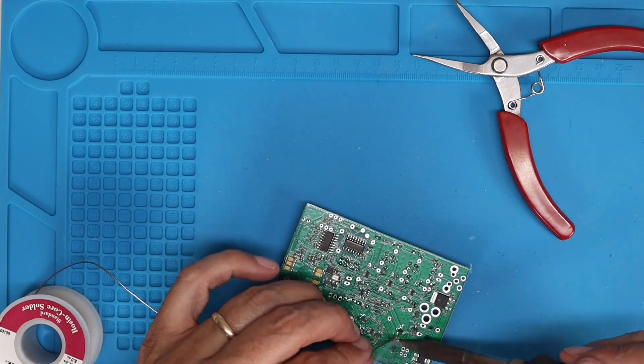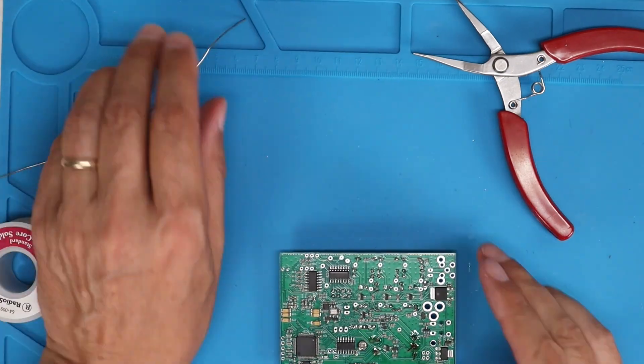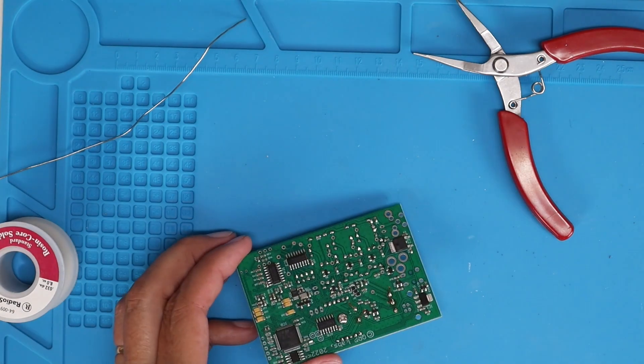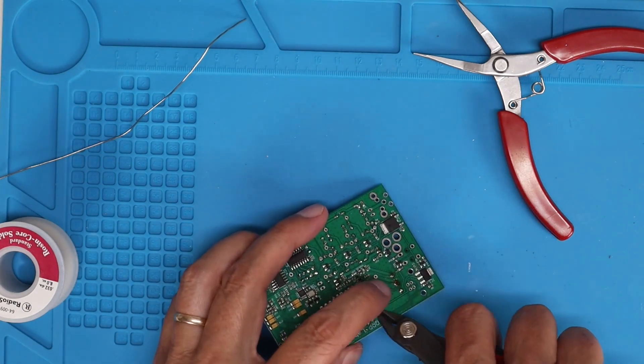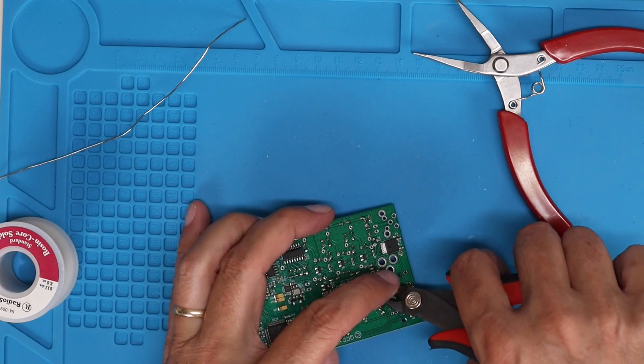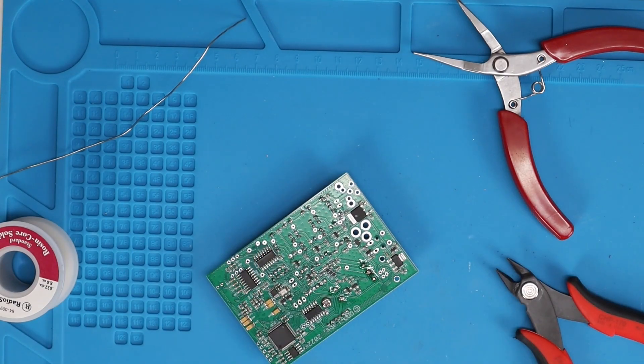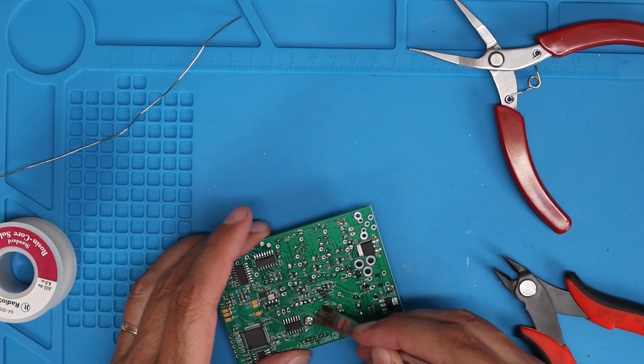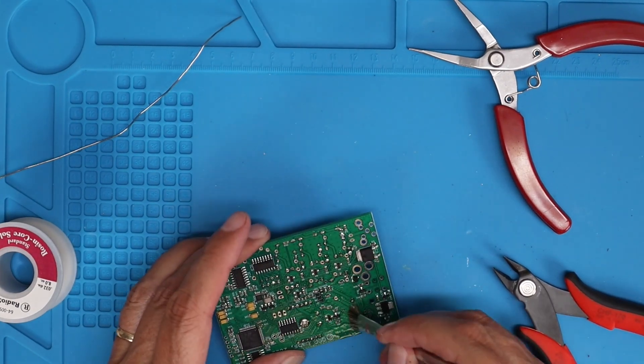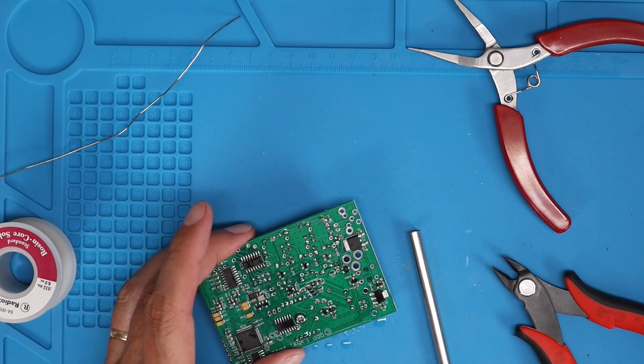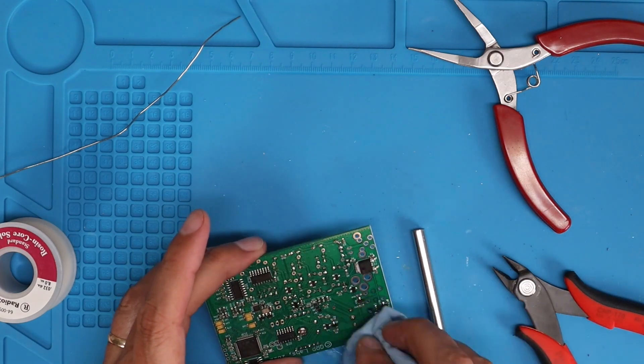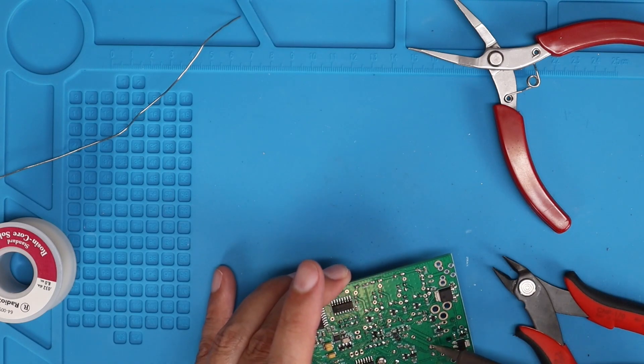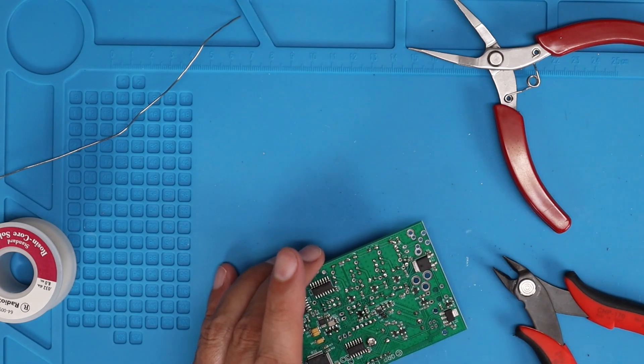And then once we get them soldered, we'll go ahead and trim them off. The instructions show trimming them off beforehand, but I prefer to trim the leads afterwards. And then after I get them all trimmed off, it's a good idea to clean off the flux with some alcohol or denatured alcohol. That way you don't leave a residue behind. That flux residue can tend to be corrosive over time. So, it's better to go ahead and clean it up.